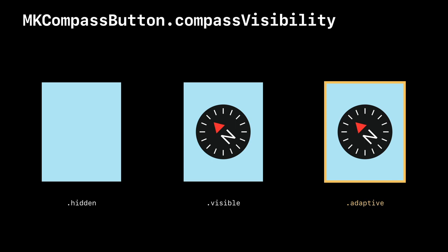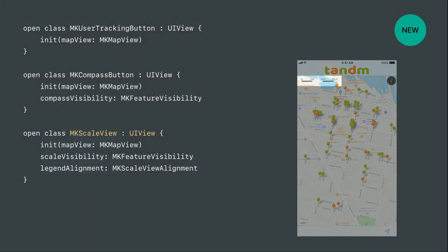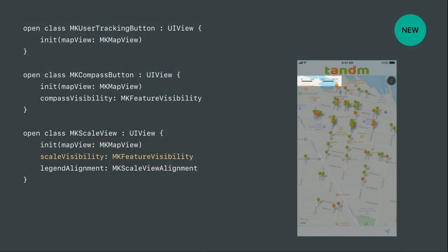The scale view also has the visibility property with the same three-state enumeration: hidden, visible, and adaptive. Adaptive is a new behavior where when the user is zooming in and out we display the scale view; otherwise we hide it. The scale view has previously been available via the shows scale property on map view, but the defaults for show scale and show compass have unfortunately been different. Now with the scale view exposed to you, all three options are available.